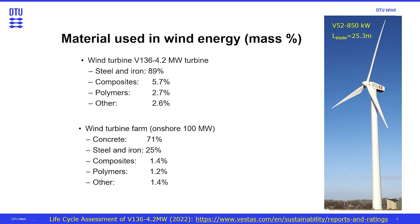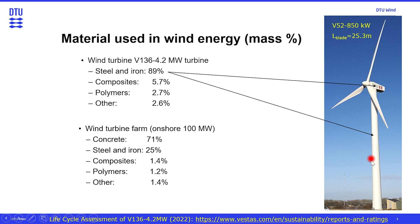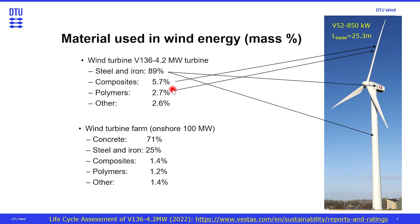Before I dive into the blades, this turbine picture is our DTU turbine, which is an 850 kilowatt turbine with blade lengths of 25.3 meters. If you look at a typical more modern turbine — here is a 4.2 megawatt turbine — and look at the amount of material by mass used in a turbine, then the dominating part is steel and iron. These are mainly located in the tower, drive train, and nacelle. Then we have composites and polymers, which are located in the blades, but as you can see, there is a much smaller amount regarding weight for that part.